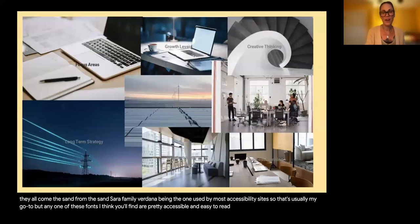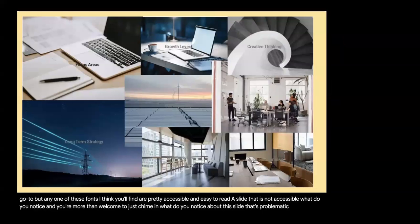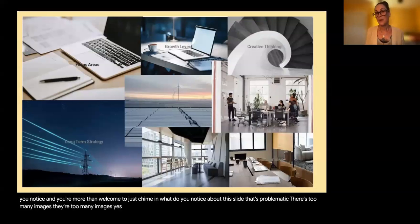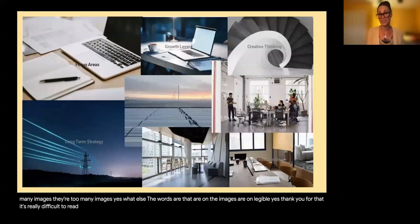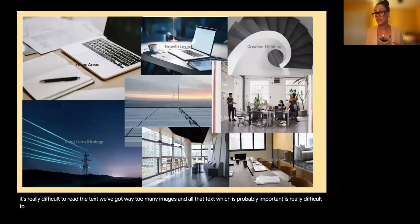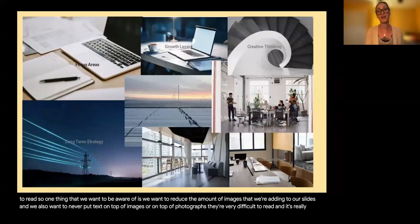Here's an example of a slide that is not accessible. What do you notice? There are too many images, and the words on the images are illegible. It's really difficult to read the text — we've got way too many images and all that text, which is probably important, is really difficult to read. We want to reduce the amount of images and never put text on top of images or photographs. They're very difficult to read and really difficult to make accessible.